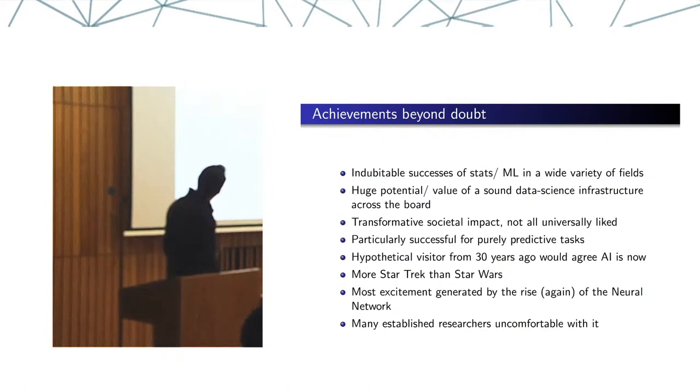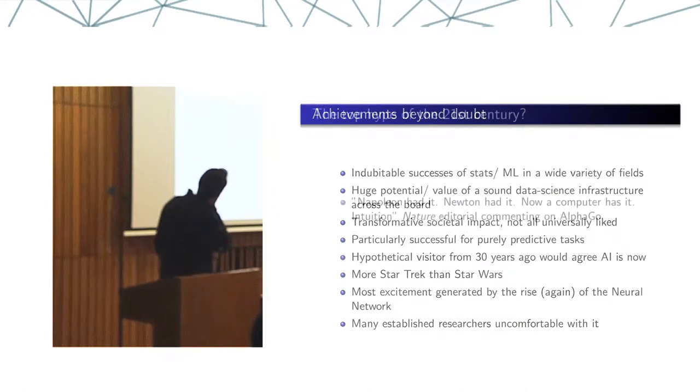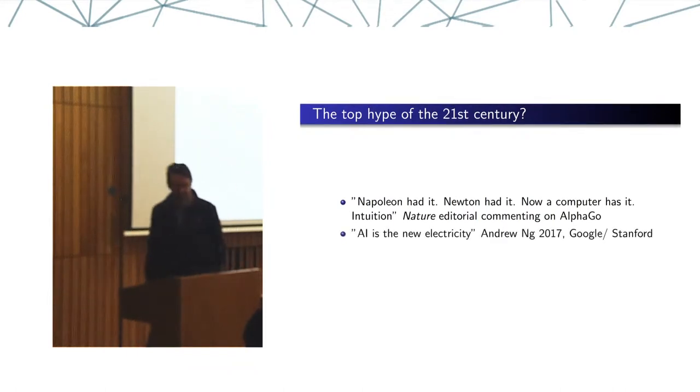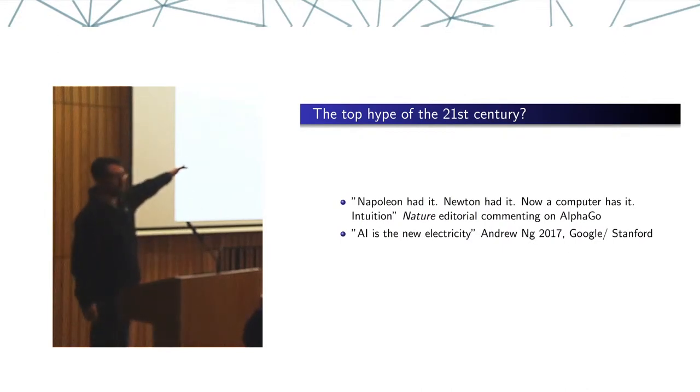The first quote, this is from Nature, arguably the most revered scientific journal, and we work really hard to try to get our papers in Nature. This is from an actual famous AI researcher or machine learning researcher, Andrew Ng, who works at Google and previously was at Stanford and still has some residual attachment to Stanford. AI is the new electricity.